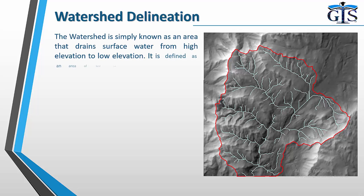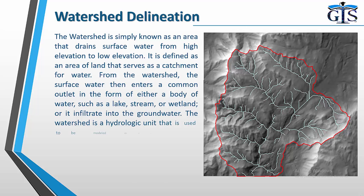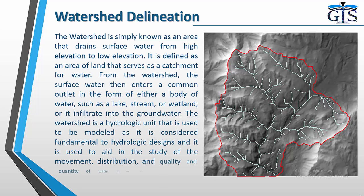What is watershed delineation? A watershed is simply known as an area that drains surface water from high elevation to low elevation. It is defined as an area of land that serves as a catchment for water. From the watershed, surface water then enters a common outlet in the form of either a body of water such as a lake, stream, or wetland, or it infiltrates into the groundwater. The watershed is a hydrologic unit used to model the movement, distribution, quality, and quantity of water in an area.